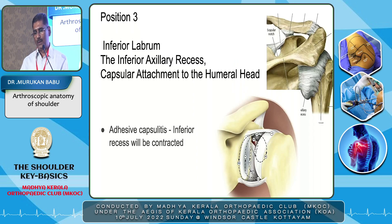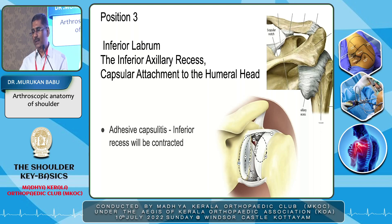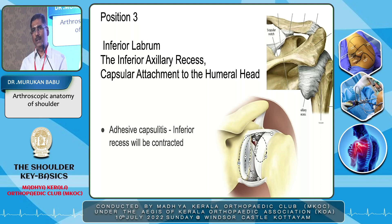Coming to the third position — from the superior, then mid-posterior, you go down to the third, lower position. Here you see three structures: the inferior labrum, the inferior axillary recess, and the capsular attachment of the humeral head. That is the diagrammatic representation of the axillary recess. Entering this area is very difficult in adhesive capsulitis.